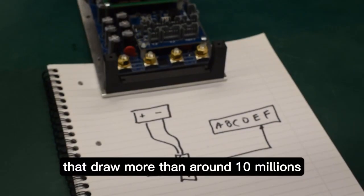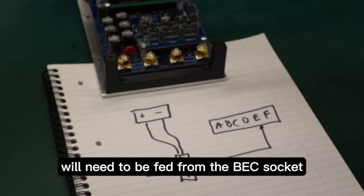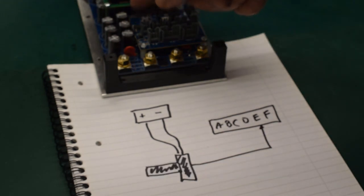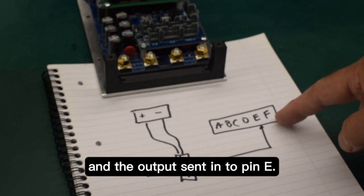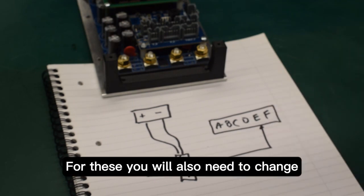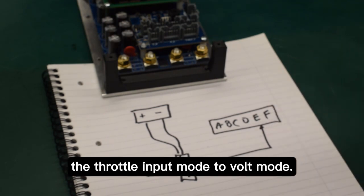Some hall throttles that draw more than around 10mA will need to be fed from the BEC socket and the output sent in to pin E. For these you will also need to change the throttle input mode to volt mode.